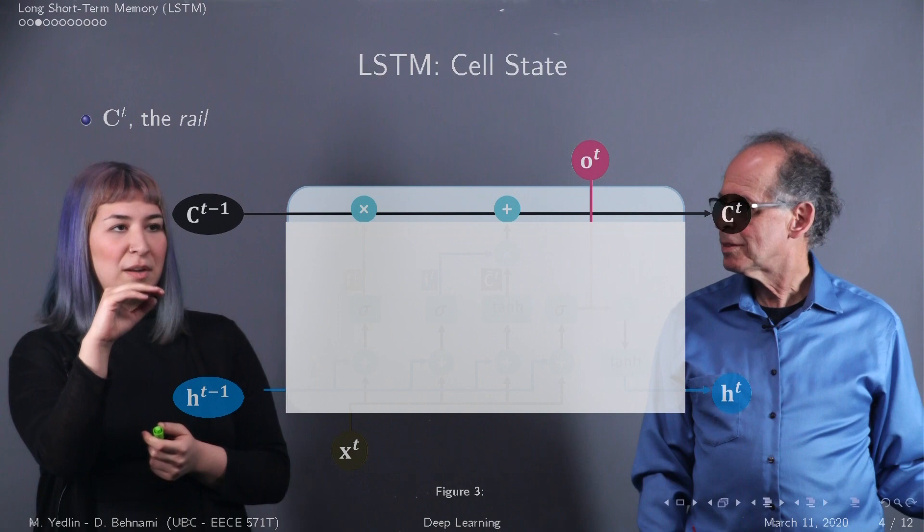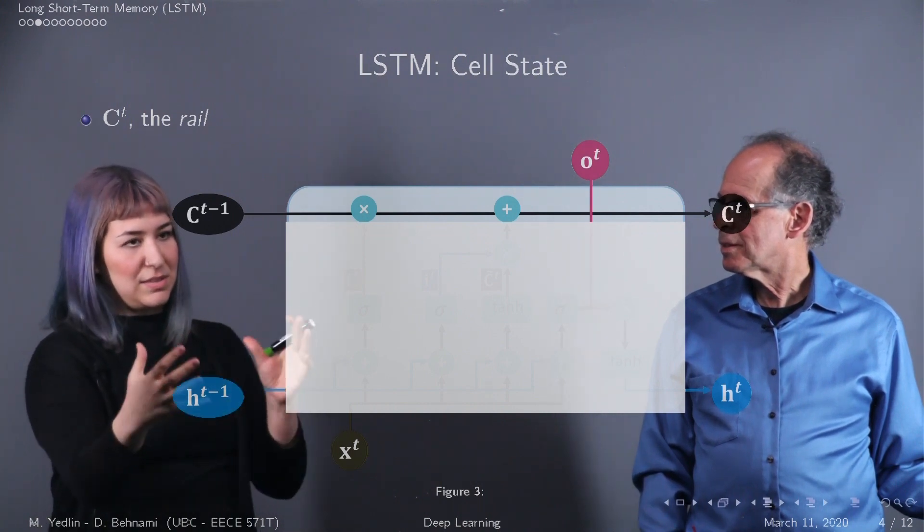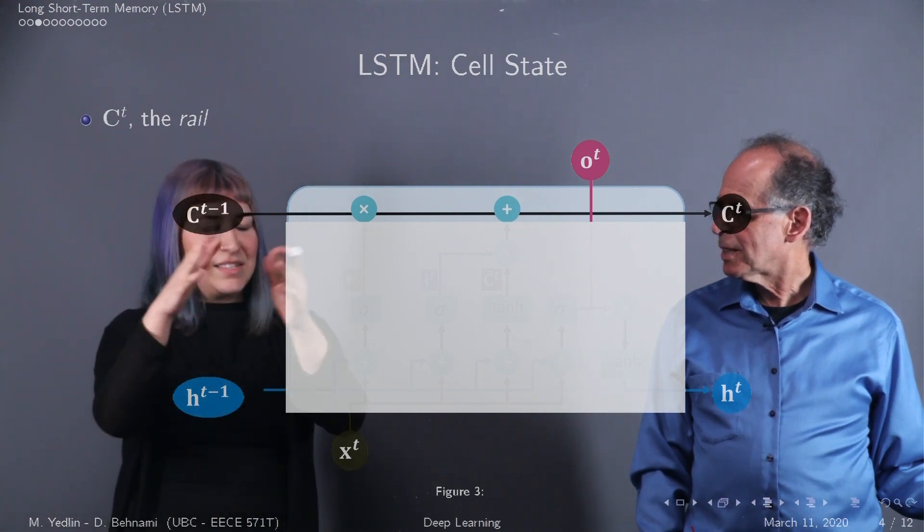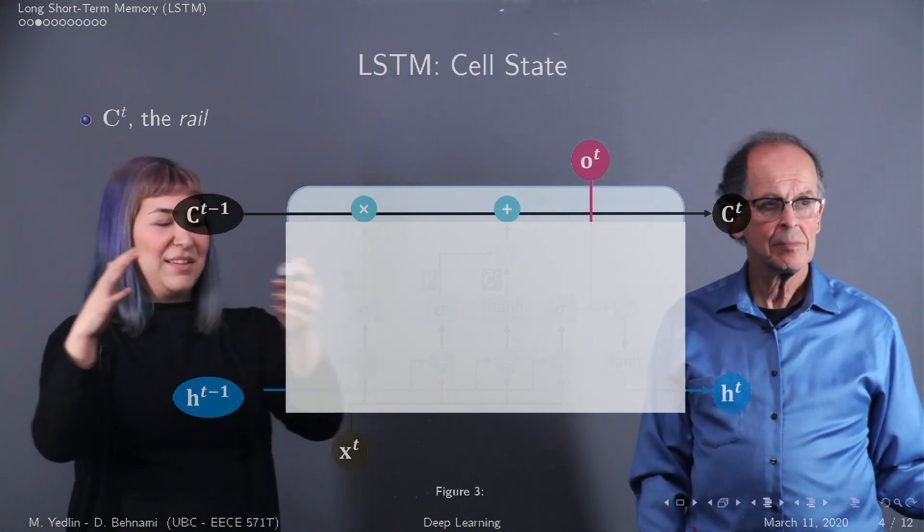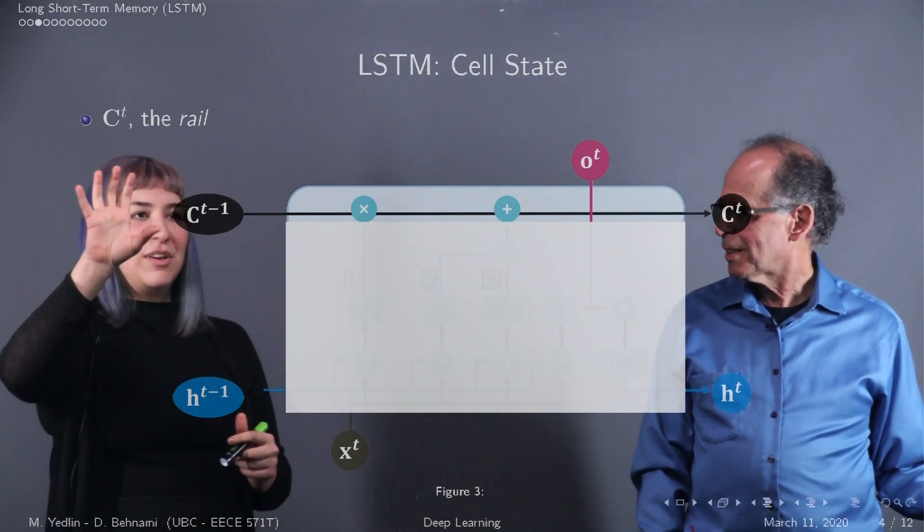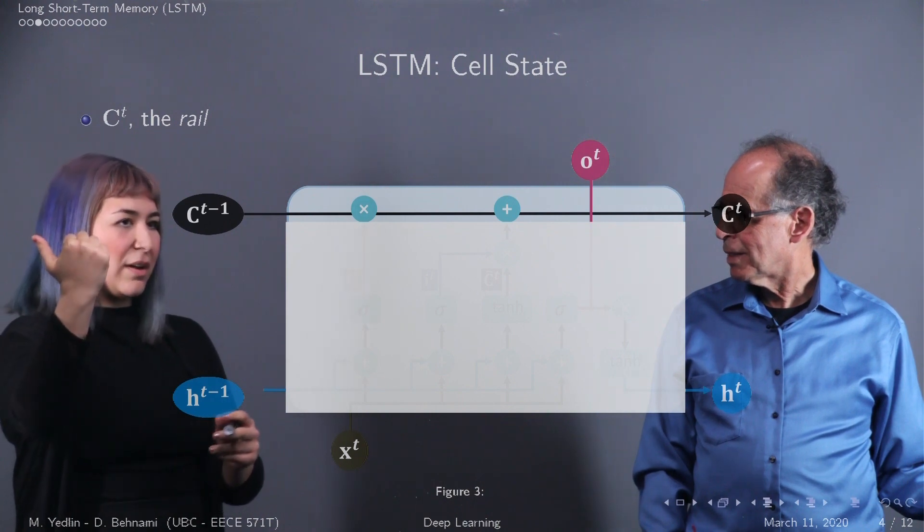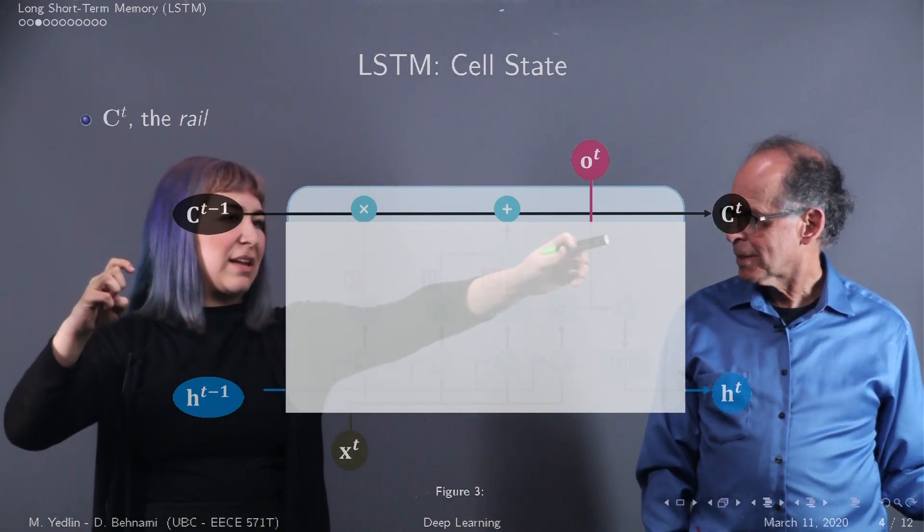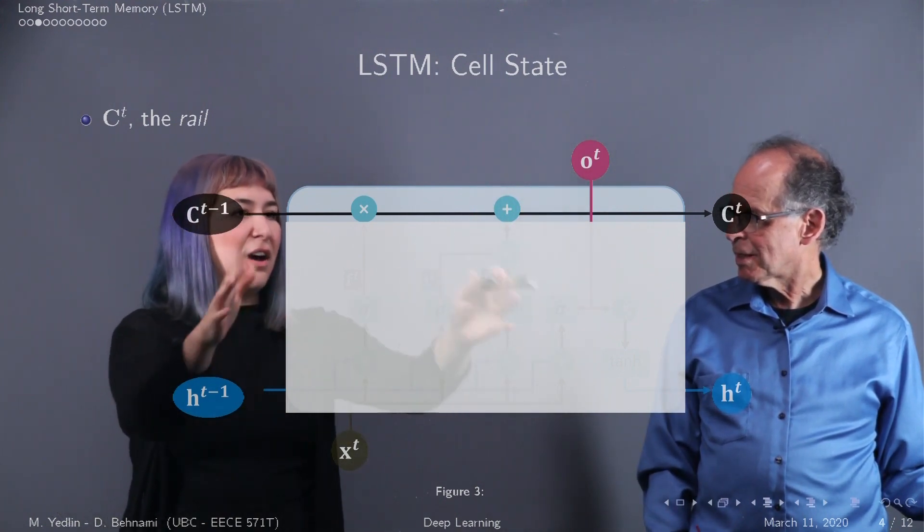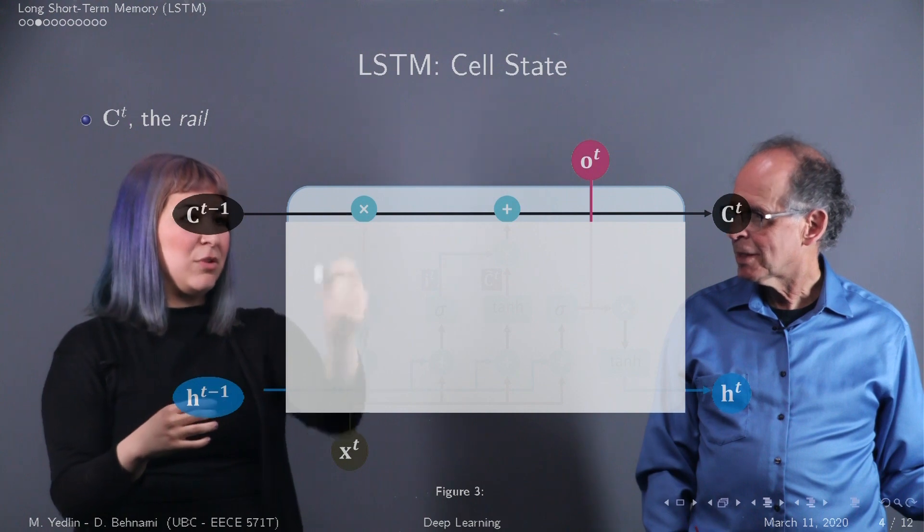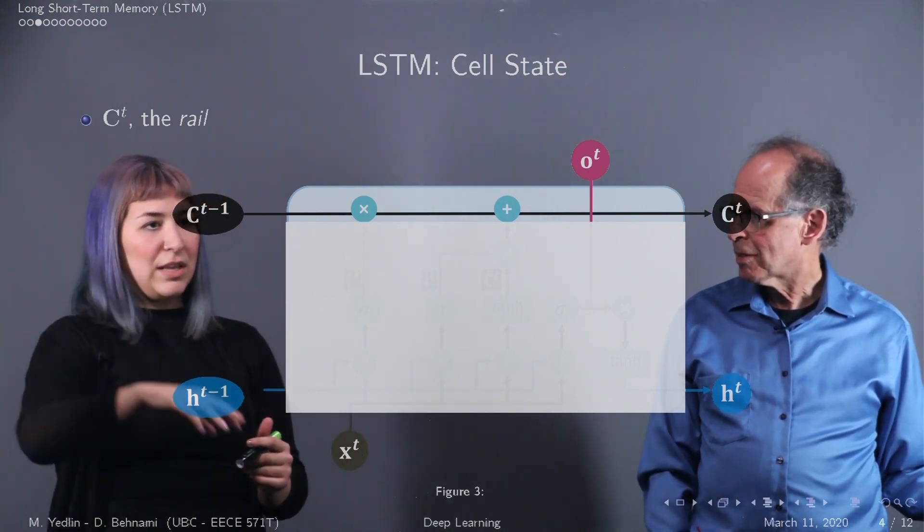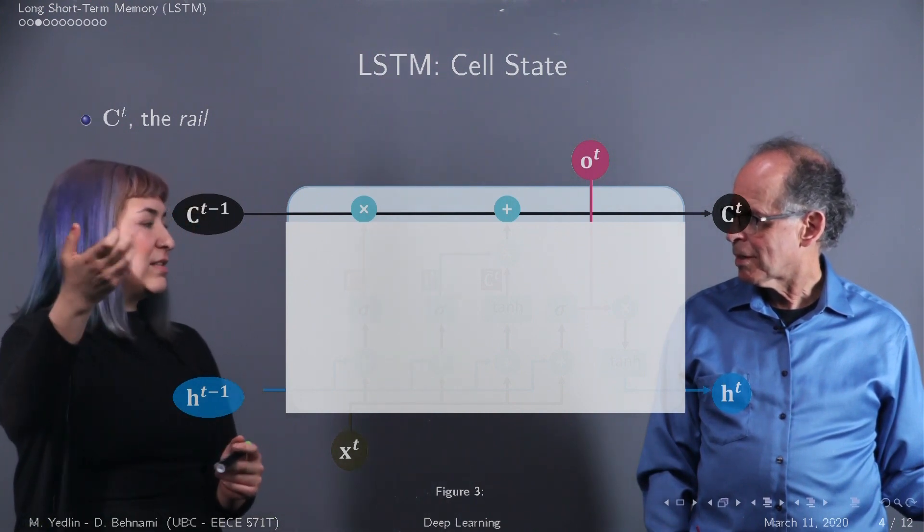The first thing we want to talk about, which we said is the main thing that sets LSTMs apart from RNNs, is the cell state. In the LSTM state you have this essentially rail looking, conveyor belt looking situation where you have the cell state from T minus 1 going directly out of the cell to C at time T. And as we uncover the rest of the LSTM, you'll see there's multiple connections that affect the cell state, including things from the input, the hidden state, as well as the cell state from the previous.